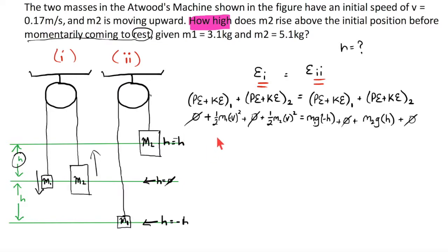Give me a moment while I clean this up a little bit. 1 half m1 v squared plus 1 half m2 v squared equals negative m1gh plus m2gh. Let's go ahead and factor some things out and then start solving for h like we were asked for. Could factor out 1 half v squared here. Could factor out gh here.